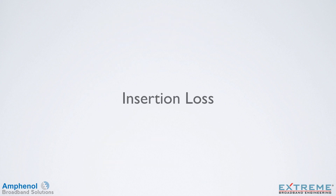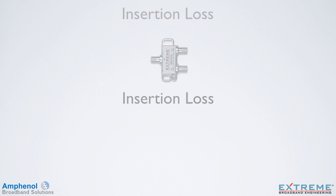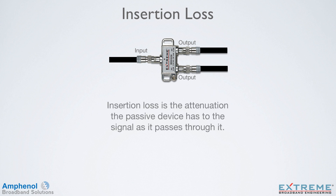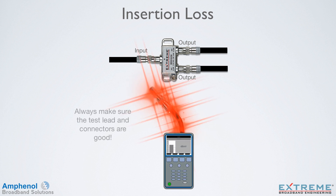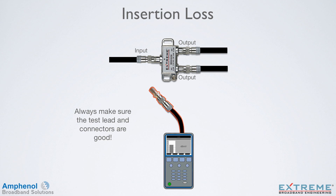First, we'll look at insertion loss. Insertion loss is the attenuation the passive device has to the signal as it passes through it. Here's a two-way splitter, and we'll check it for proper insertion loss. Prior to any testing, make sure that your test leads and connectors are good. The average use of these is over 100 times a week, so a good practice is to change them weekly.